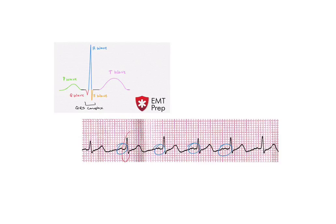The second component are the QRS complexes, circled here in red. The QRS complex corresponds to the electrical activity when the ventricles contract or depolarize.